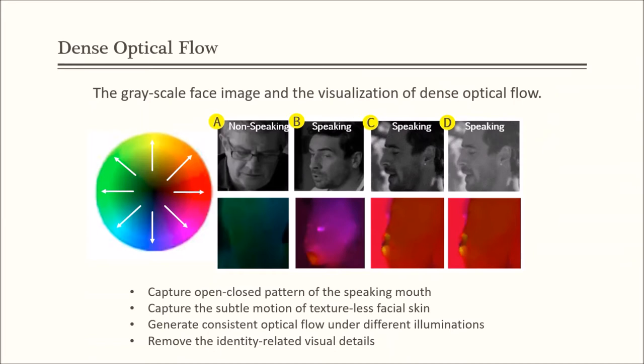Third, the face generates consistent optical flow under different illuminations. Fourth, the optical flow removes the identity-related visual details, and it can avoid the network mislearning the correlation between the identity and the speaking label.